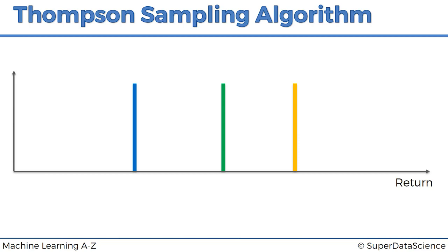Here we've got a scale where the horizontal axis is the return — the return that we expect to get from a bandit. We're going to look at a simplified problem with just three bandits, because there's going to be a lot going on in this chart and we want to keep it as simple as possible. The same thing applies for five or ten machines.